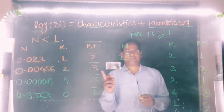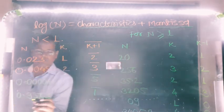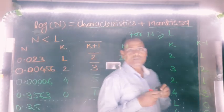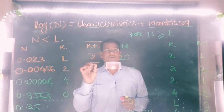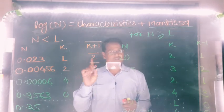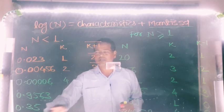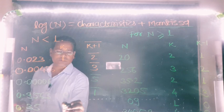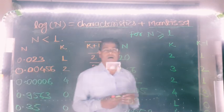So this is the method to find the characteristics of a given number. Final example: 0.35. Count the number of zeros after the decimal point before the first non-zero digit — here 3 appears immediately after the decimal point, so there is no zero. Number of zeros equals 0, plus 1 equals 1, characteristics is bar 1.